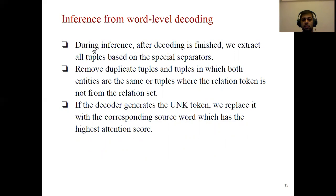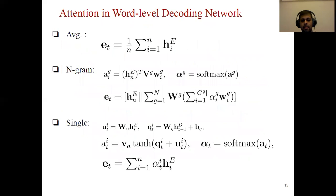During inference, after decoding is finished, we extract all tuples based on the separators, remove duplicate tuples, and remove tuples in which both entities are the same or the relation names are not from the relation set. If the decoder generates an UNK token, we replace it with the corresponding source word with the highest attention score — this helps the model identify new entities during inference. We use three attention variants: average, N-gram based, and single attention; the single (Bahdanau) attention performs best.